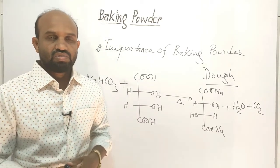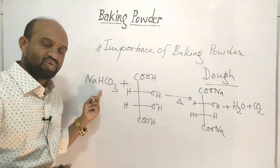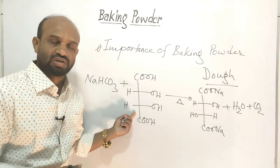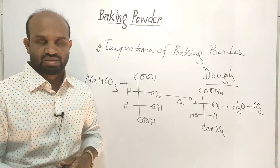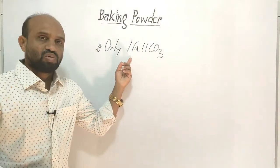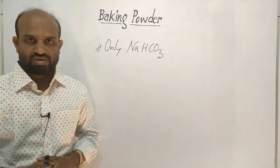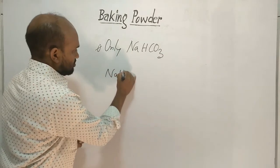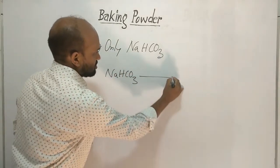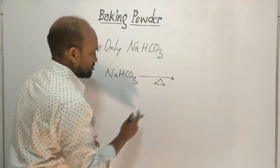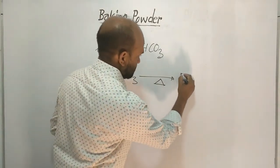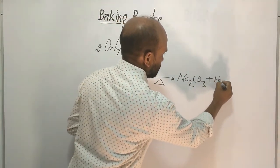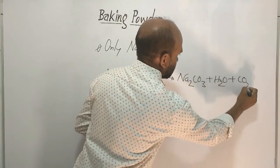Now let's see what will happen if only sodium bicarbonate is used without tartaric acid during making breads and cakes. When only sodium bicarbonate is heated, it forms sodium carbonate, water, and carbon dioxide.